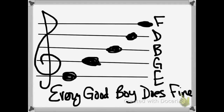Now we need to figure out the space notes. What note comes between E and G? Think A, B, C, D, E, F — so we have F. And what do we go to after G in the musical alphabet? A.